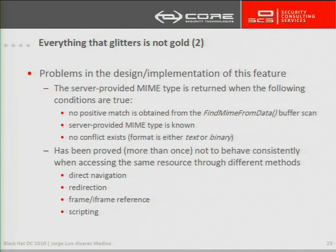There is also another proven problem: Internet Explorer doesn't behave consistently when accessing the same resource by different means. For example, when accessing a resource by direct navigation, Internet Explorer can render it in a given way, but if accessing the same resource through a reference, through scripting, or through a redirection, the resource can be treated as if it were of another type. This has also been a key factor in carrying out this attack vector.